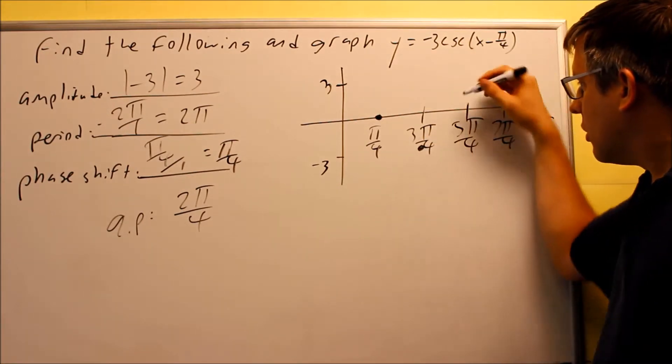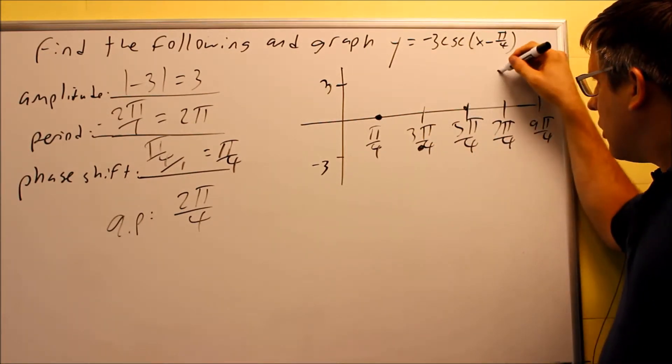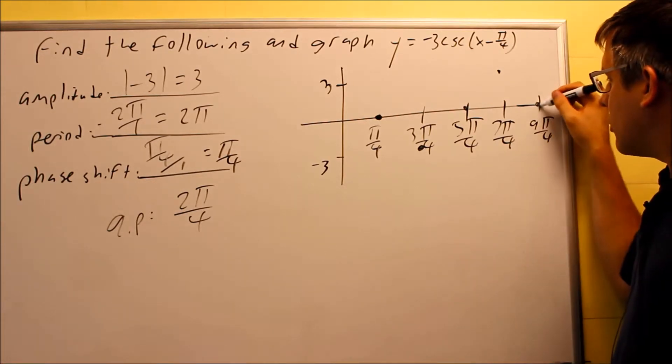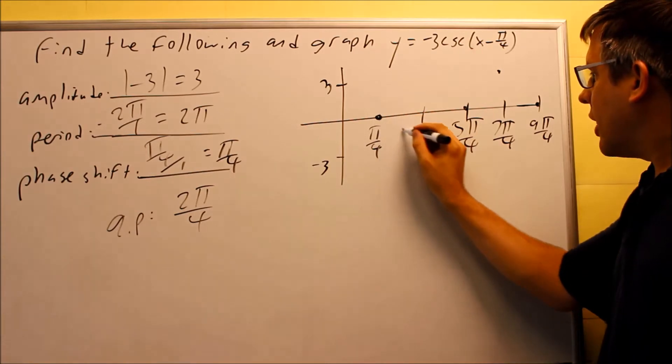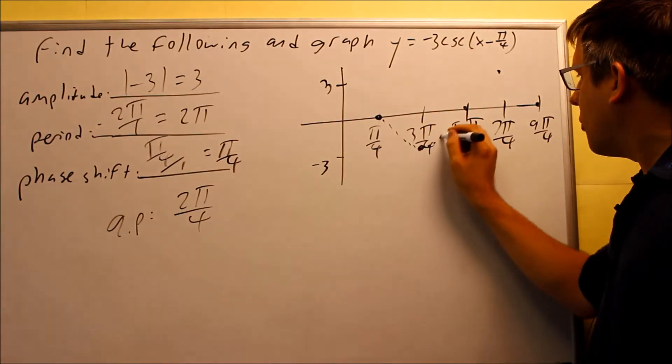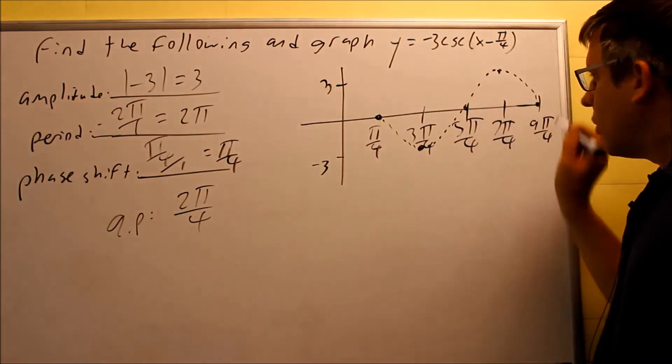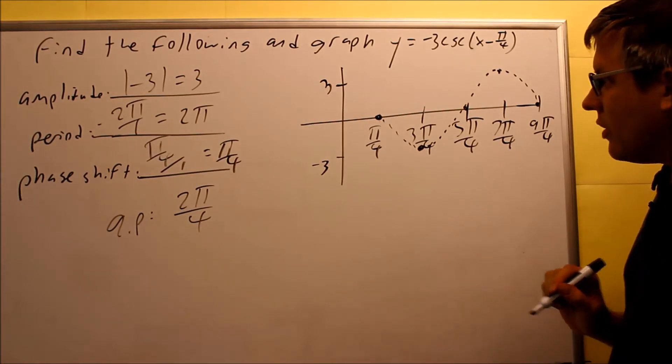So we're going to go down here, then up to that one, back up to 7 pi over 4, and then we're going to go down to 9 pi over 4 there. So here is a dotted line. I'm going to put through here what my sine graph is going to look like.